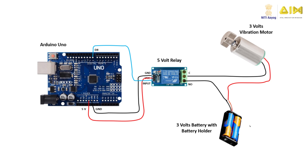As a next step, make connections on the output side of the relay. Connect one lead of the vibration motor to the common or C pin on the relay. Connect the second lead of the vibration motor to the positive lead of a 3-volt battery holder. Connect the negative lead of the 3-volt battery holder to the normally open or NO pin on the relay.